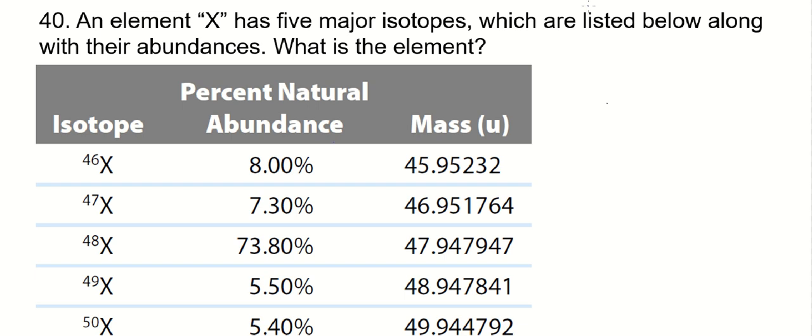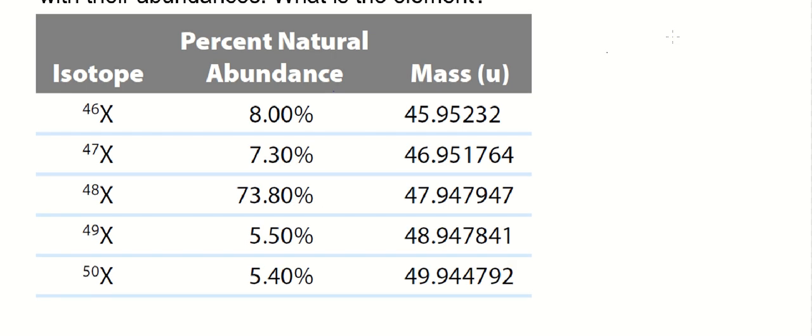Element X has five major isotopes which are listed in this table below. This table gives us the percent natural abundance or the relative abundance of each of these isotopes, and we're also given the masses of each of these isotopes.